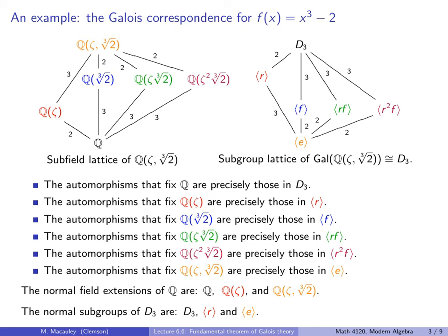Let's go over this in more detail, and in particular understand the second part of the Fundamental Theorem, which says that given an intermediate field on the left, the corresponding subgroup on the right consists of precisely the automorphisms that fix that subfield. Let's recall how the Galois group — which consists of six automorphisms — acts on the roots of this polynomial. One root is the real cube root of 2, then there is a root up here which is zeta times the cube root of 2, and a root down here which is zeta squared times the cube root of 2.